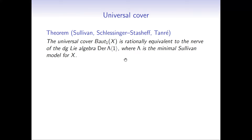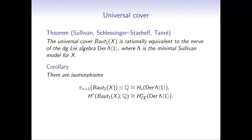Taking the positive truncation of this DG Lie algebra corresponds exactly to taking the universal cover. The main consequence of having a DG Lie model is that you can compute the rational homotopy groups algebraically: the homology groups of this chain complex give the rational homotopy groups of the classifying space. Similarly, the Chevalley-Eilenberg homology of the DG Lie algebra computes the homology of the space.